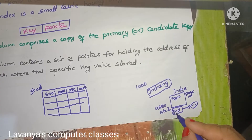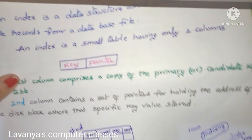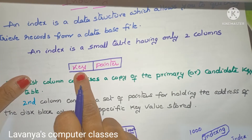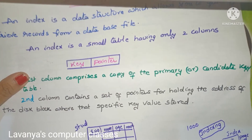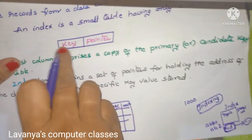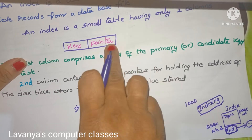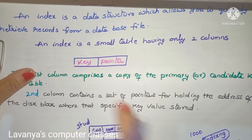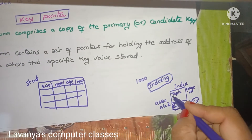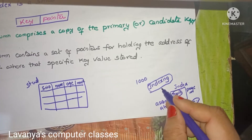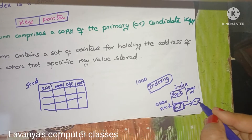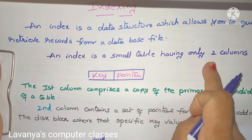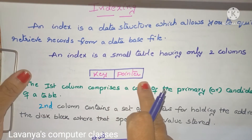We are searching for a particular topic — in this case, indexing. The topic is the key value, and the value we are searching is known as the search key. The pointer indicates where the particular key is available. Indexing is the key, and the page number where it is available is like a pointer. So, an index is a small table having only two columns: the first is the key and the second is the pointer.